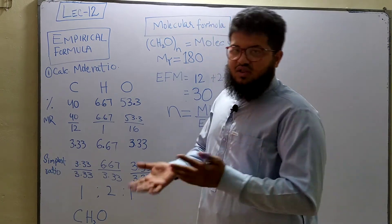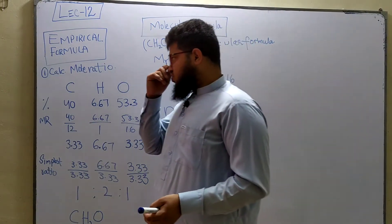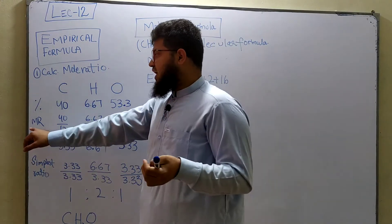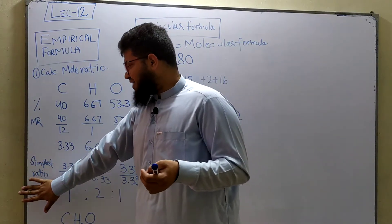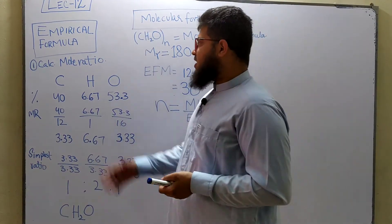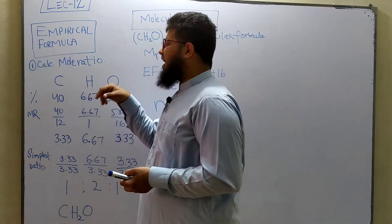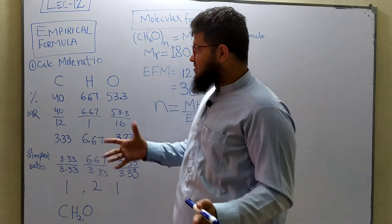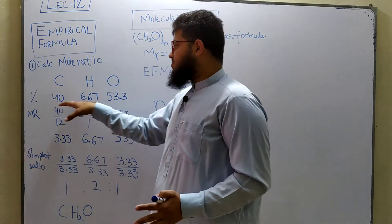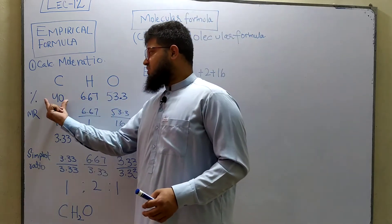There are three simple steps to calculate the empirical formula — the same steps you've been following at O level. First, calculating the mole ratio; second, finding the simplest ratio; and third, getting your empirical formula. For example, in this question I've been given three atoms — carbon, hydrogen, and oxygen — present in a compound.